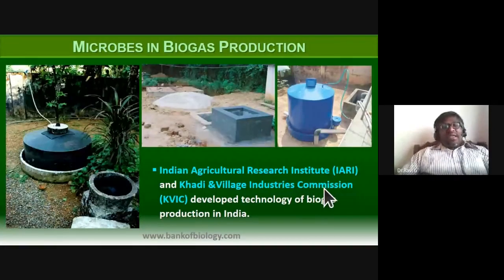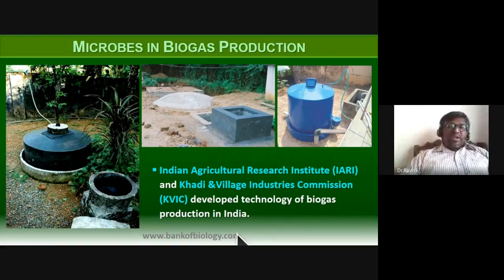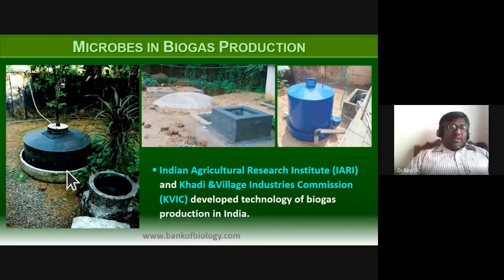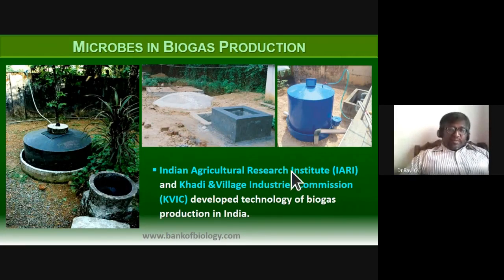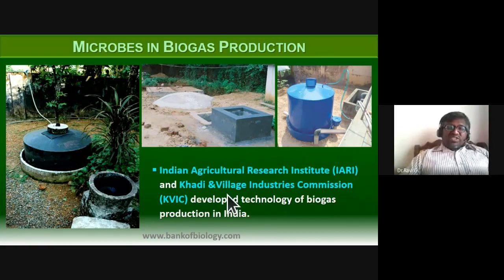The Indian Agricultural Research Institute (IARI) and Khadi and Village Industries Commission (KVIC) developed the technology of biogas production in India. The setup includes a concrete tank, a floating cover above the biogas, a feeder, an outlet, and an outlet to remove the spent slurry — all part of the gobar gas unit.